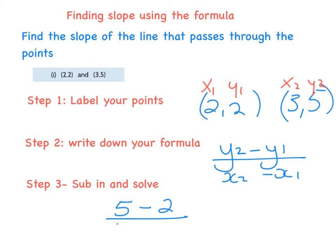All over x₂, which is 3, minus x₁, I'm going to write 2. Which will give me 5 minus 2 is 3, over 3 minus 2, which is 1. And if we can write it in a whole number we will, so the slope of those two points is 3.